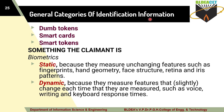Next are the general categories of identification information — how we prove identification. One way is dumb tokens. A dumb token is a plastic card that contains a magnetic strip. With the help of that magnetic strip, we identify that the person is the genuine user. Next is smart cards. A smart card is also a plastic card, but instead of a magnetic strip it uses a magnetic chip. That chip contains information to identify that the user is the genuine or authenticated user.